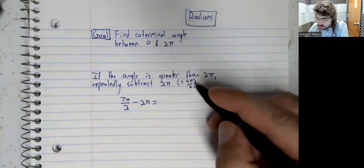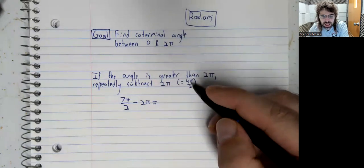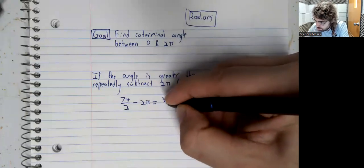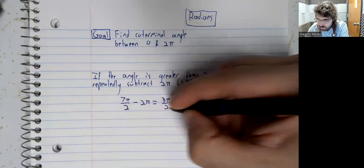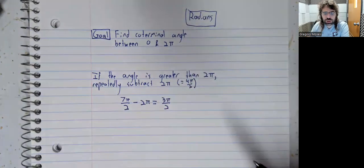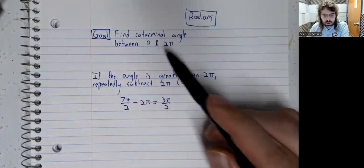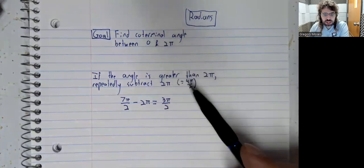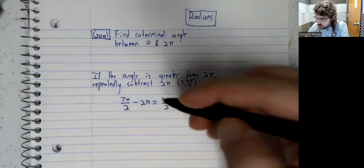So using our common denominator, 3 pi over 2 is in this interval. It's clearly greater than zero, and it's less than 4 pi over 2.